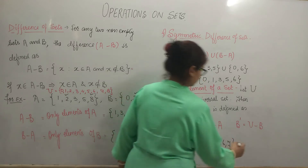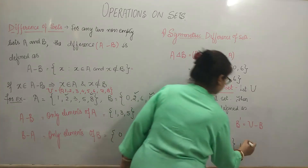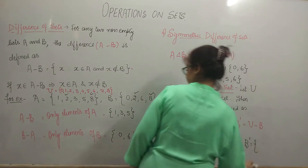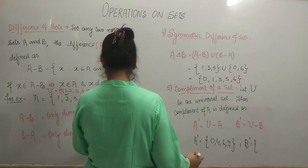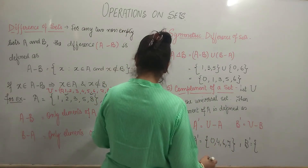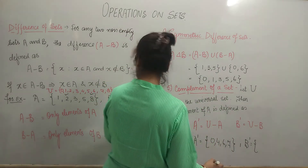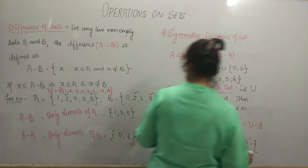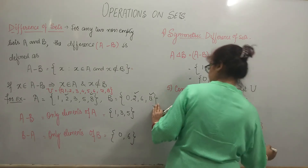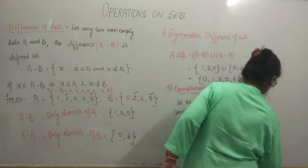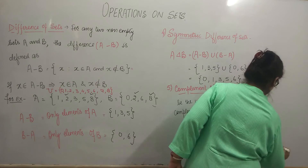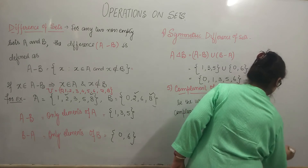Now B complement will have elements. Set B has 0, 2, 6, 8 — so B complement has 1, 3, 4, 5 and 7.